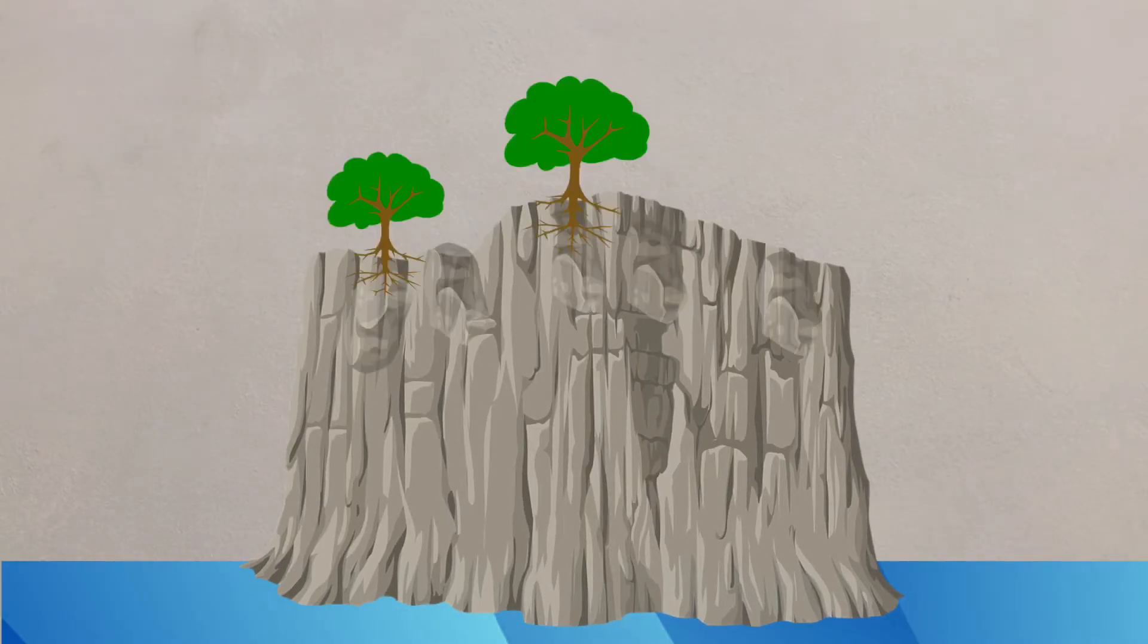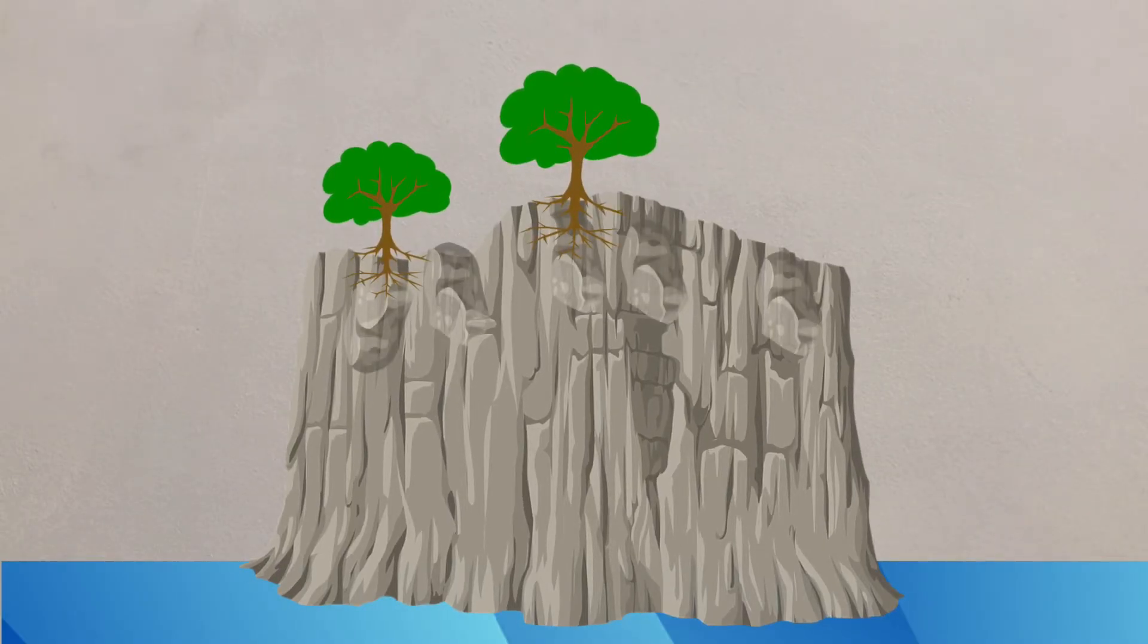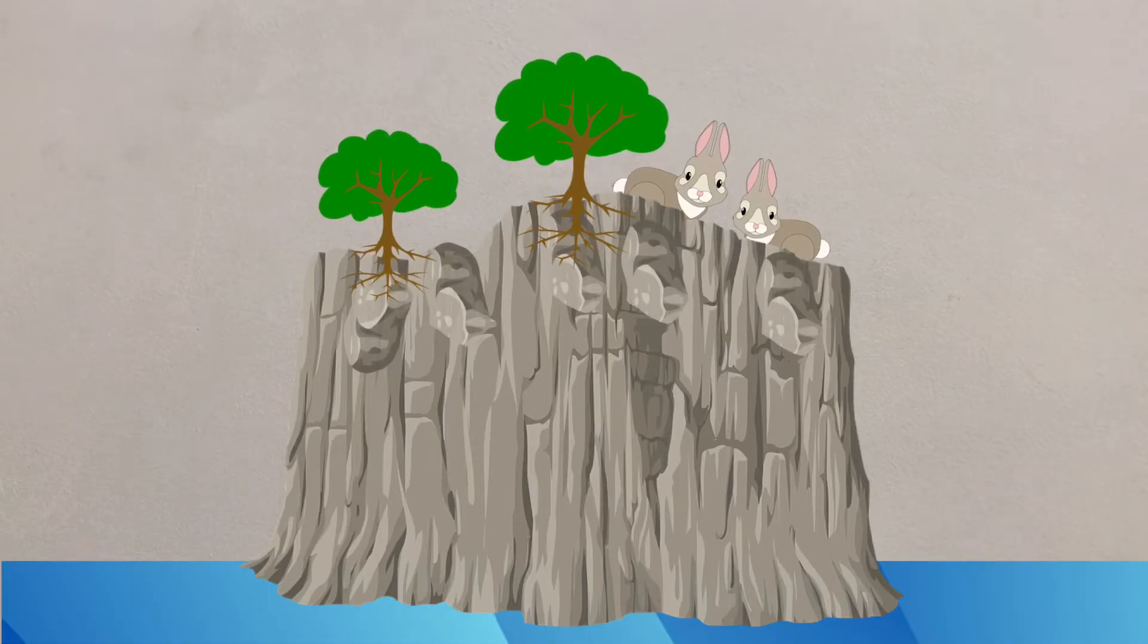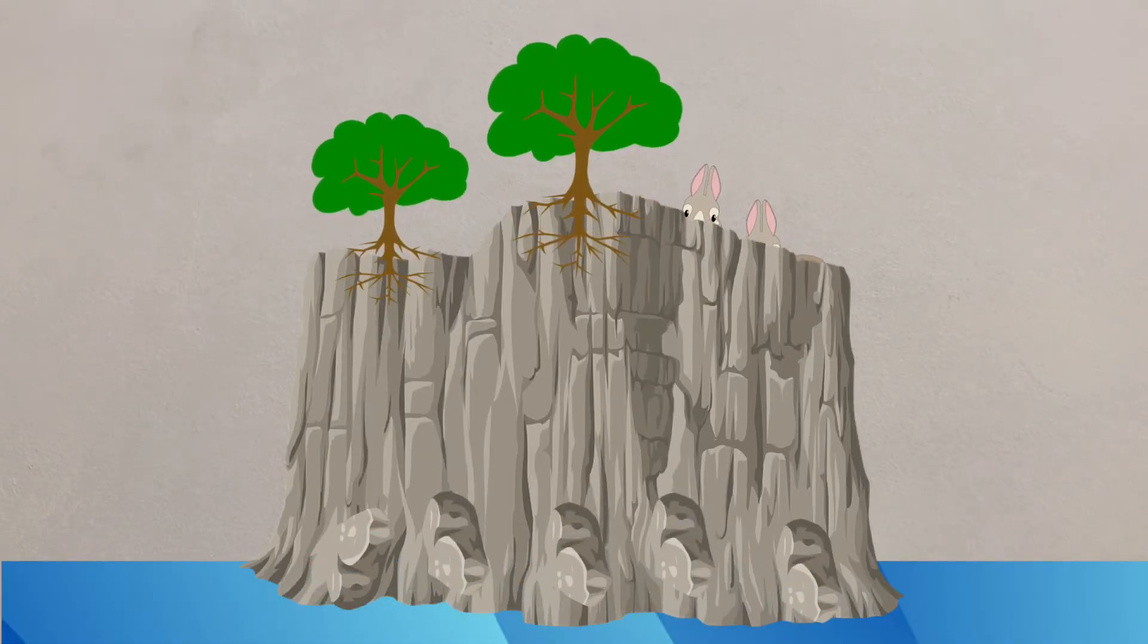Biological weathering occurs where plant roots grow through cracks on the rocks, or where animals like rabbits burrow into weaker sections of rock. This can slowly erode areas at the coast.